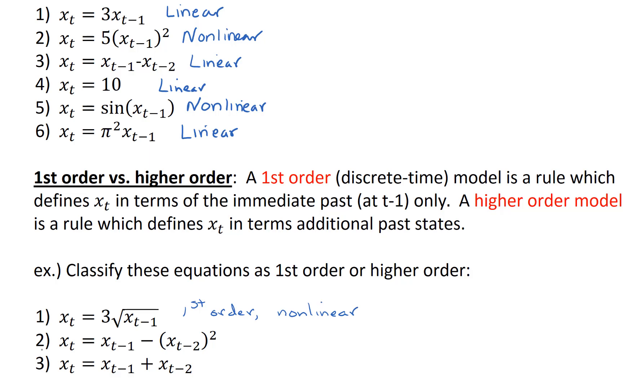In the second example, x sub t equals x sub t minus 1 minus x sub t minus 2 squared. This is a higher order model because we're accounting for not just the t minus 1 step, but more distant past information. In other words, what's going on at time t minus 2. This is also a nonlinear model.